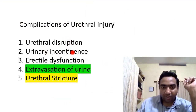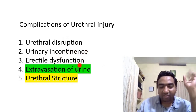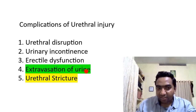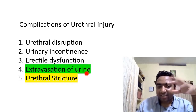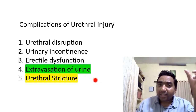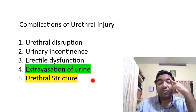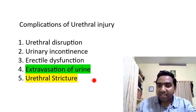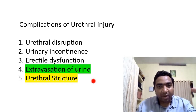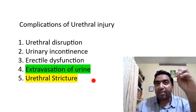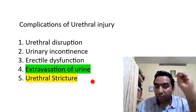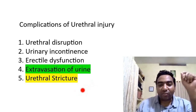So complications of urethral injury include: urethral disruption with associated fibrosis and hematoma formation; urinary incontinence due to muscle or nerve damage; erectile dysfunction (parasympathetic and sympathetic); and problems due to extravasation of urine — urine can extravasate into the peritoneal cavity or retroperitoneally into the retropubic space, which can lead to infection. Extravasated urine must be drained.